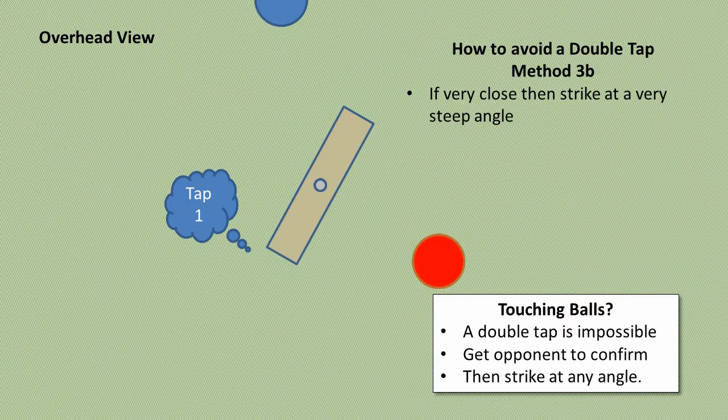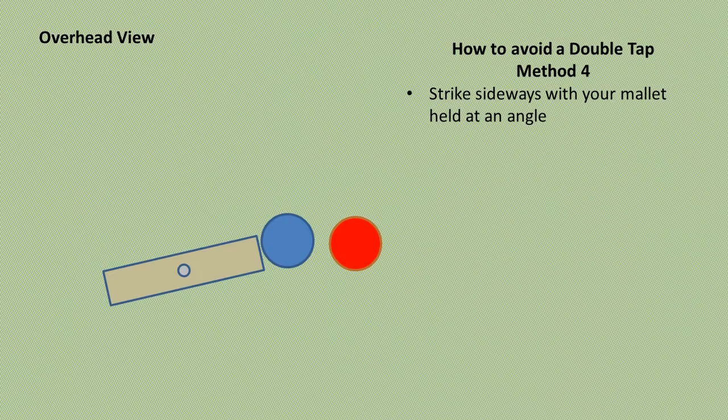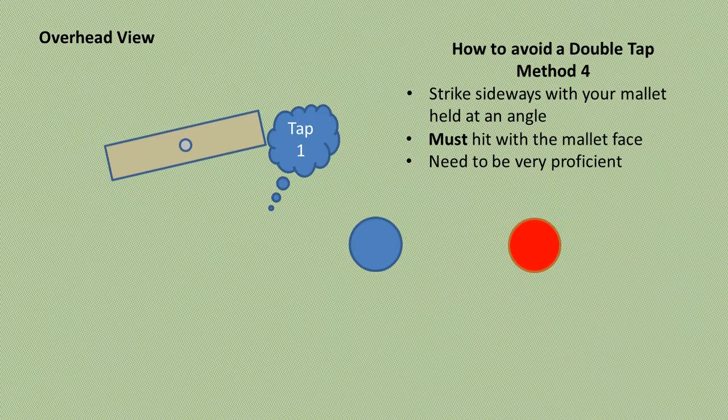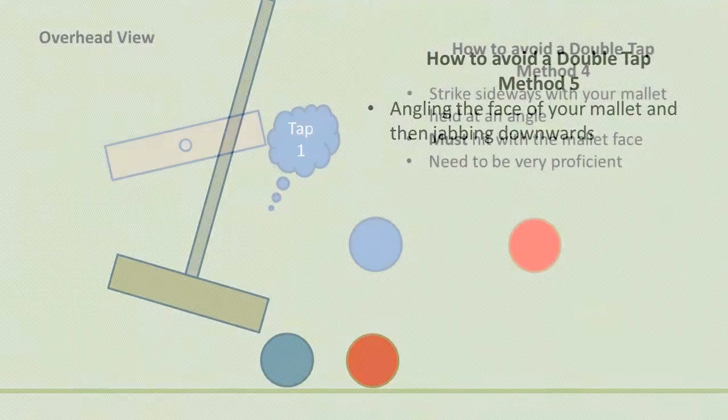Another technique that can be difficult to master is to have your mallet at an angle and then swing it sideways. Remember that you must strike the ball with the face of your mallet. Striking with an edge is a fault, so become proficient with this technique before using it in a game.